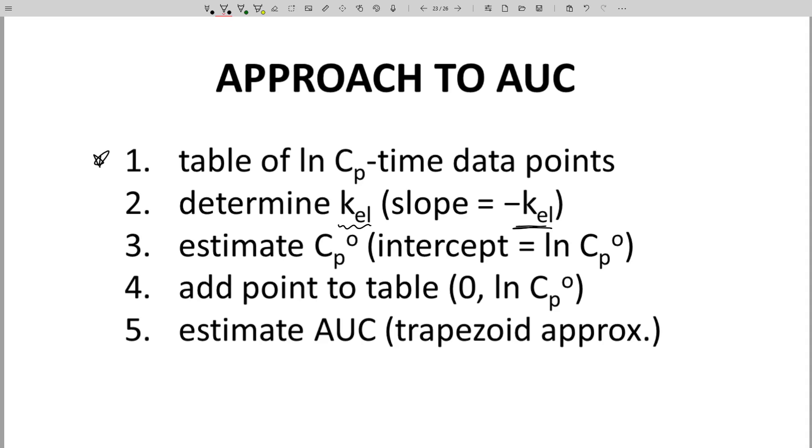Fourth, we'll add this new data point to our data set. That's the data point for zero natural log CP0. And then the final step, we'll use the trapezoid method on the CP time curve to estimate the area under curve, the AUC. This last step is the new one.